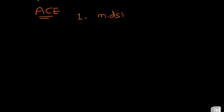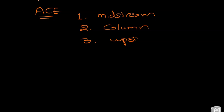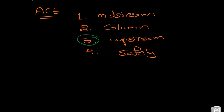Now we are going to talk about what we will cover in the Aspen HYSYS Expert User certification. For the ACE — Aspen Certified Expert — you will be tested on four topics, and you need to complete three of them. The first is the midstream topic, the second is columns, the third is upstream, and the fourth is safety. It is recommended to choose between upstream and safety before the exam and focus on that during your studies.